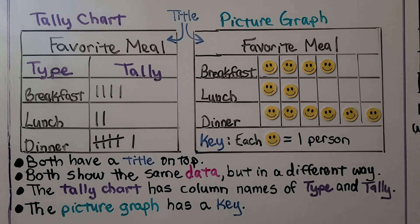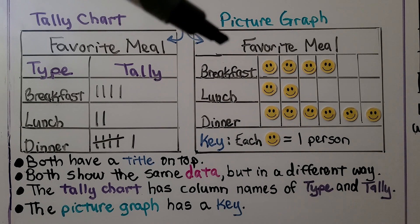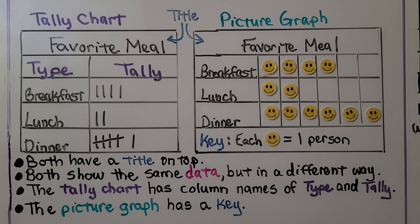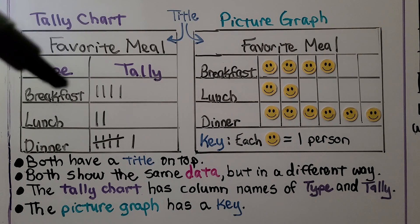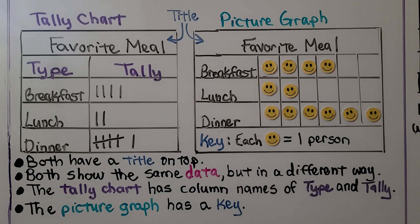Both say 'Favorite Meal' as the title. They both show the same data but in different ways. The tally chart has column names of type and tally, while the picture graph has a key. We can see what is the same and what is different for each chart.